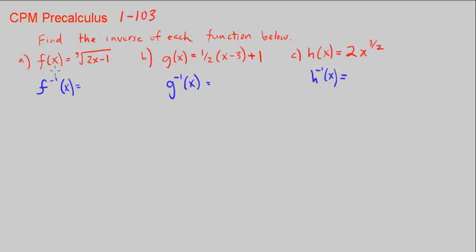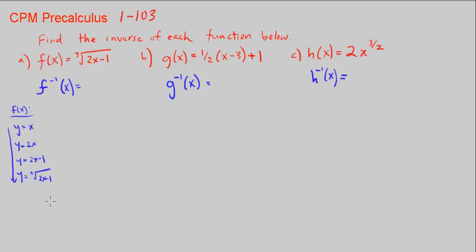Remember how we do this. First, we want to look and see how we are creating or wrapping each function. So how is f(x) formed? Well, we start with y equals x, then we multiply by 2, then we subtract 1, then we take the third root. That's how we get our function f(x).